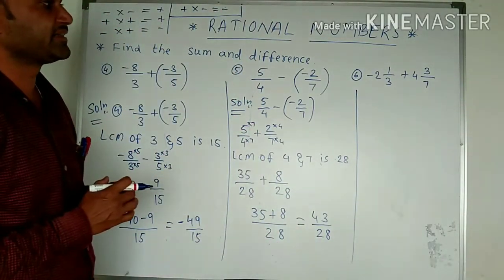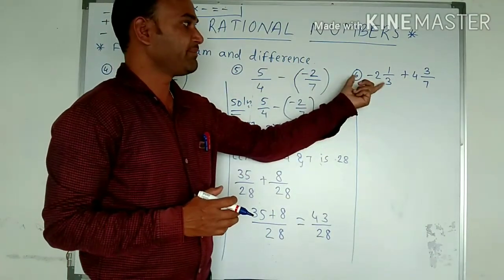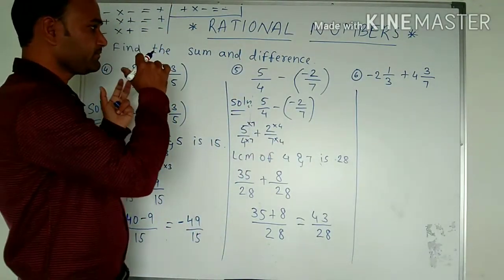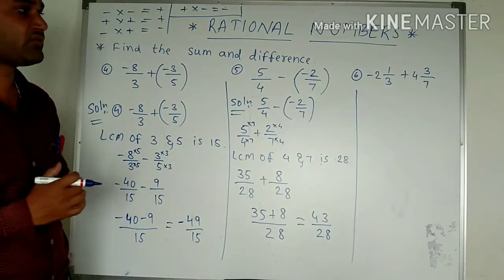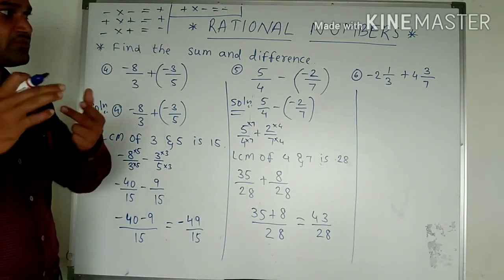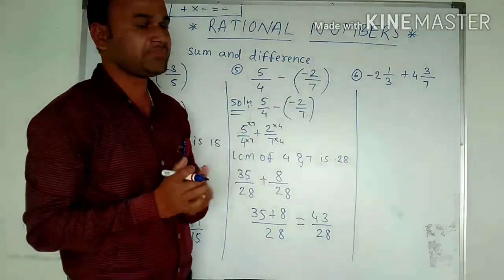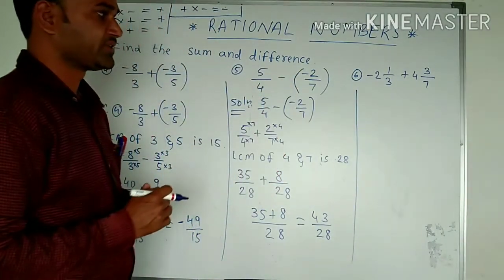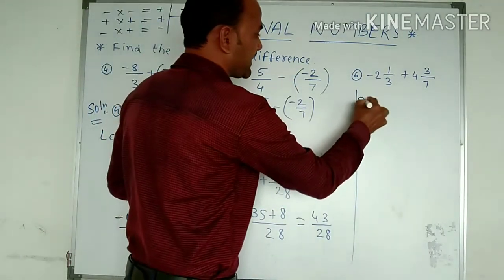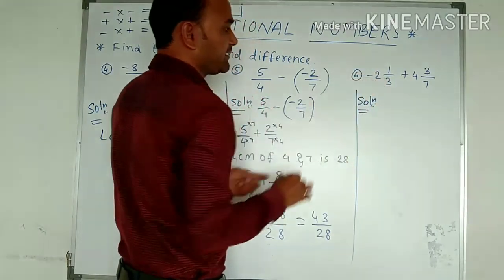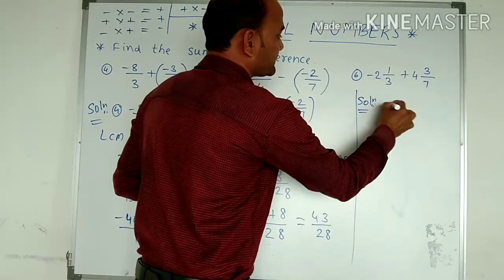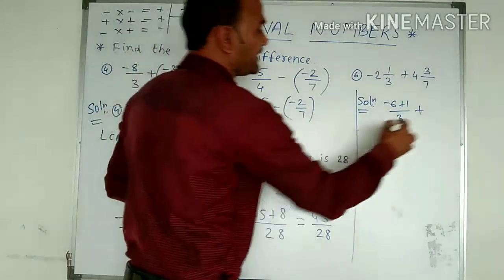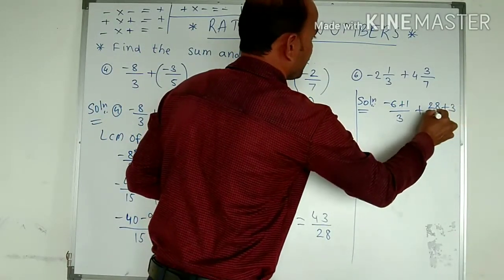The next example has numbers written as mixed fractions — mixed rational numbers. We need to convert the mixed fraction to an improper fraction. We multiply: 3 times 2 is 6, minus 6 plus 1 upon 3. In the same case, 4 times 7 is 28, plus 3 upon 7.